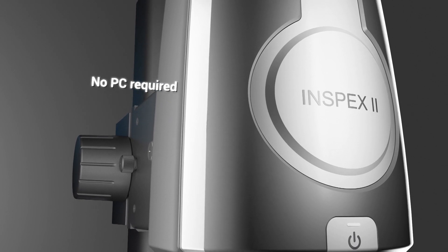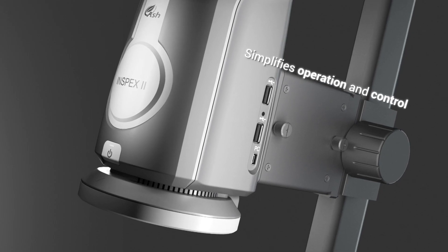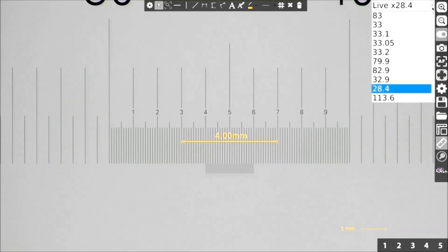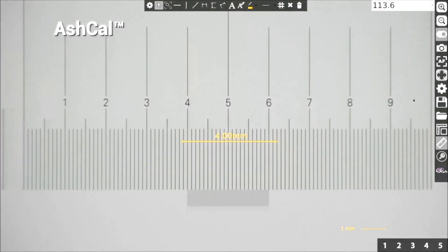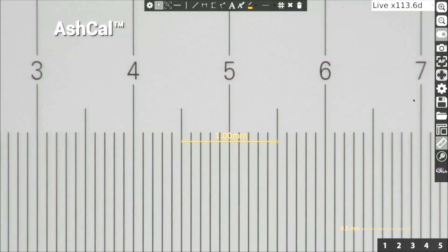It has an intuitive software interface that simplifies operation and control. The Ash Cal auto calibration feature removes the need for time-consuming zoom change recalibrations, increasing productivity and efficiency.